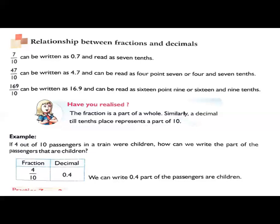Look at the example. If 4 out of 10 passengers in a train were children, how can we write the part of the passengers that are children? So 4 out of 10 passengers, 4 out of 10. What is the fractional number? 4 by 10. So the fractional number is 4 by 10.